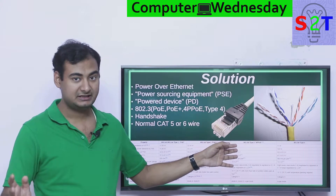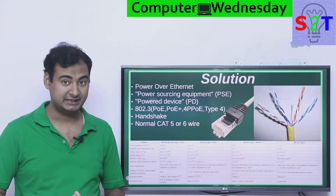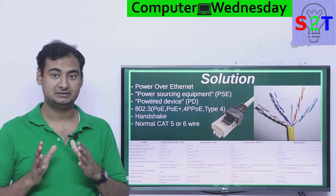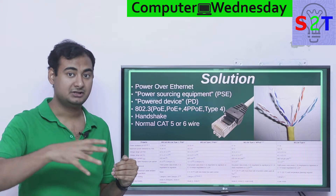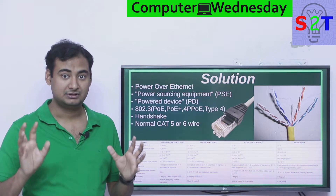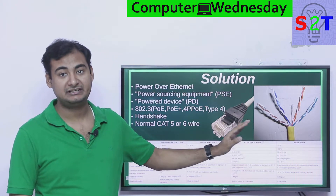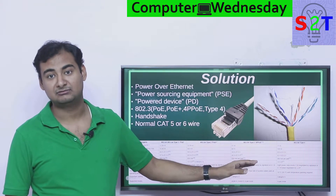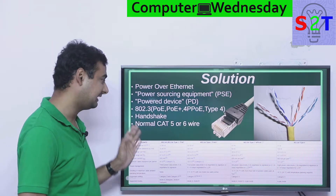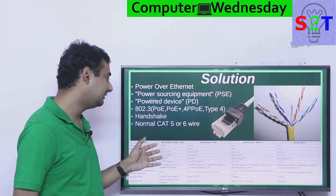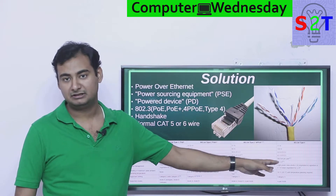Then there is 4P PoE - the BT standard, Type 3 - which can go up to 50 watts. With that much power you can run a PTZ security camera, which not only runs the camera itself but also has enough power to physically move and zoom the camera, since those motors also consume power. Then the latest standard, Type 4, goes up to 70 watts, and at maximum draw can reach upwards of 100 watts - enough power to run laptops. These are the standards; you don't have to worry too much because the handshake prevents mistakes, and you can use normal Cat 5 cable.